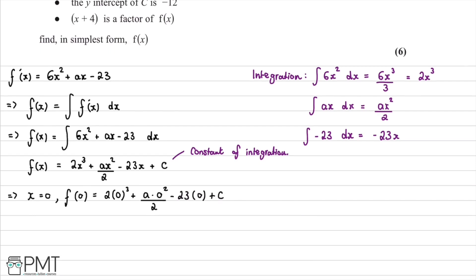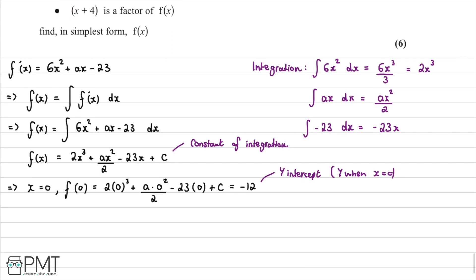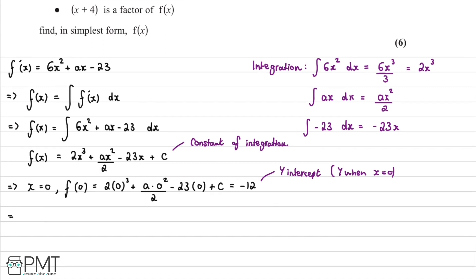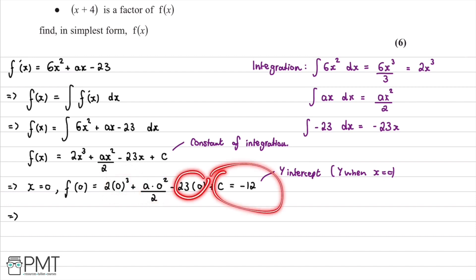This is equal to the value of the y-intercept, so f(0) = -12. Looking at the terms, each one evaluates to 0, so we are left with C = -12.